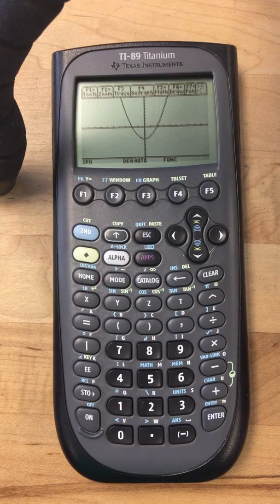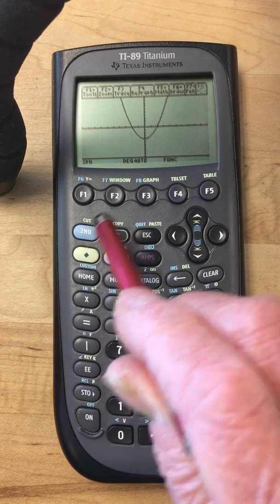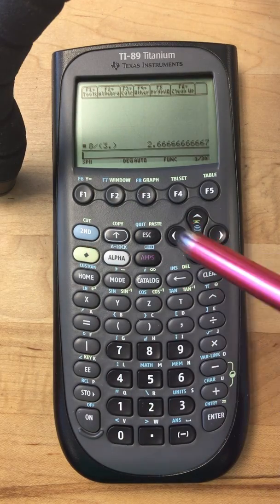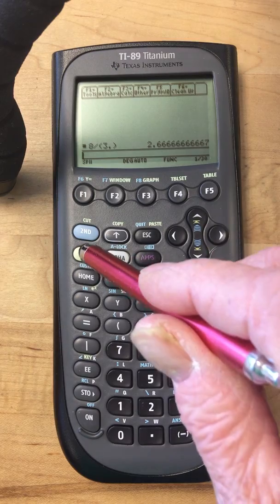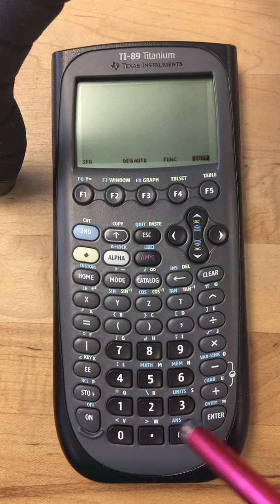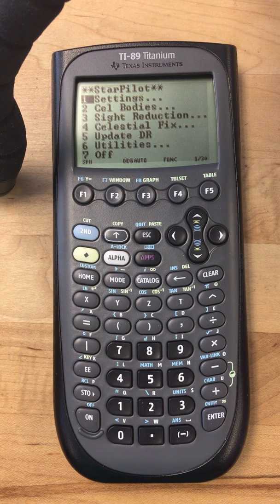Okay, so that's good. Now we want to get back to Star Pilot, and in this case you do, again, second quit, second quit. Let's clear that. It is clear already. Then you just do green diamond 1, and you're back to the Star Pilot, like that.